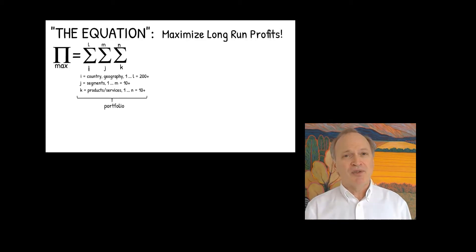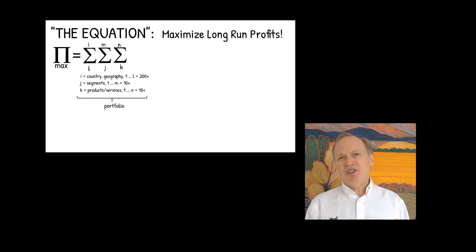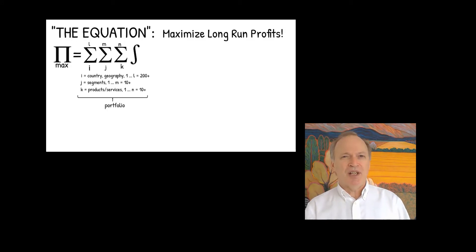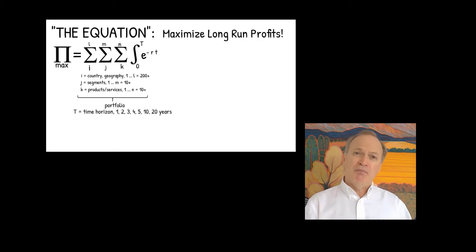From that portfolio I have to get some cash flows. We'll use an integral sign for real-time discounting — summing up cash flows continuously. Cash flows from today, time 0, up to time period T, which is my time horizon — could be one year, two years, five years, ten years. Then we discount them: E to the minus RT, where R is my discount rate. Just call the finance guys and ask them what the discount rate is.